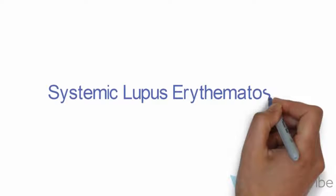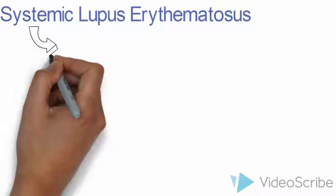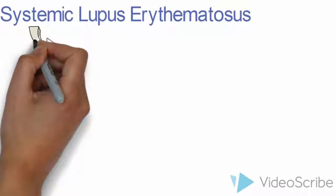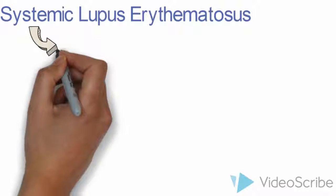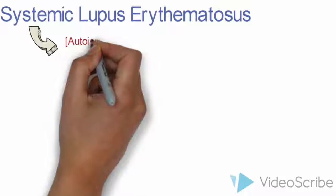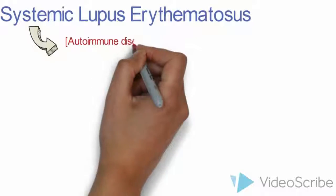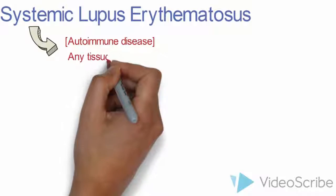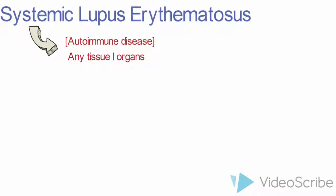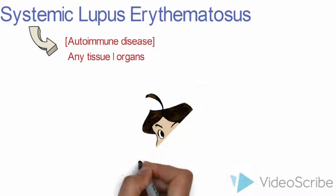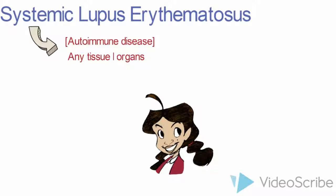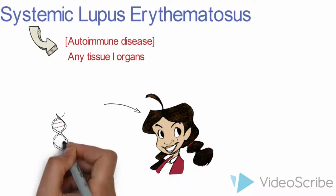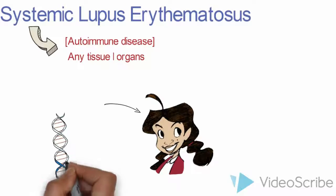Systemic lupus erythematosus — let's go back and see what systemic stands for. As we already discussed, systemic is an autoimmune disease which means it affects any tissues and any organs within our body. So let's set up a scenario. This person, Penny Proud, has a susceptibility gene — genes that make her susceptible to getting lupus. So it's in her genes.